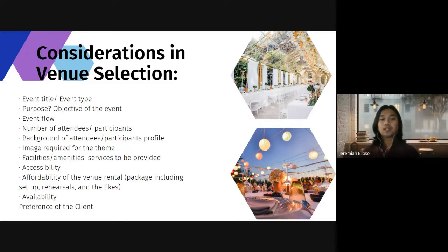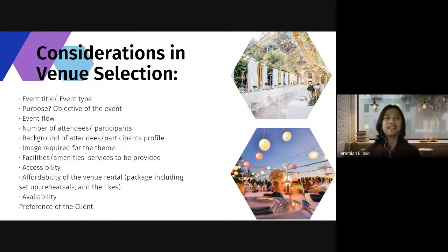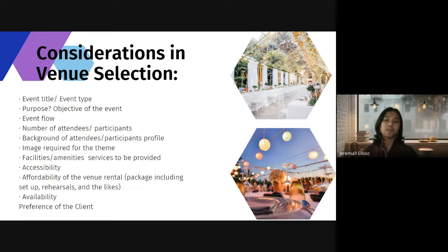It is very risky to have an outdoor venue primarily because of weather conditions, so as an events planner you have to form a risk management procedure to handle this kind of situation. You also have to consider what is the purpose or objective of the event, because your venue should assist you in accomplishing that objective. Then consider the event flow, which will determine the amount of space and layout needed — for example, whether you need a dance floor or a large space for planned activities.